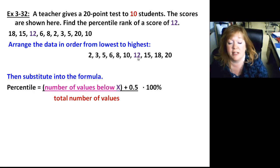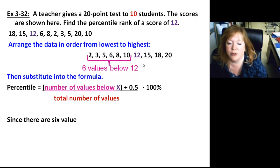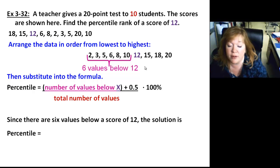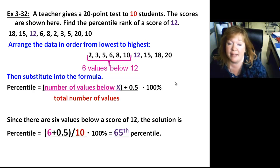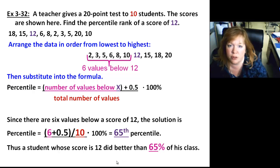Number of data values below X. In this case, 12 is our data value. It's one of the scores. How many we have below there is 6. Total number of values is 10. So there's 6 values below 12. We'll just plug it right in there. 6 plus 0.5 divided by 10 times 100, and you get 65. So it's a 65th percentile. This is saying that a student with a score of 12 did better than 65% of his class.